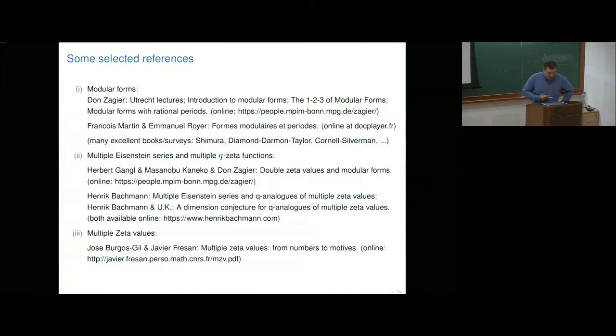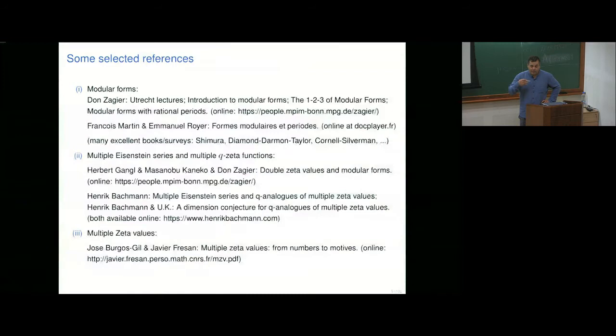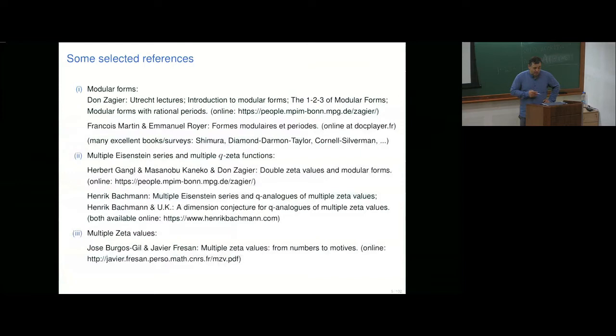Of course there are many excellent books. Shimura is very influential, and then there's work related to Fermat's Last Theorem — proven by attaching Galois representations to modular forms — covered in Cornell-Silverman and Diamond-Darmon-Taylor. The next topic is rather new: it arose out of a paper by Gangl, Kaneko and Zagier, who proved some relations between identities in double zeta values and modular forms.